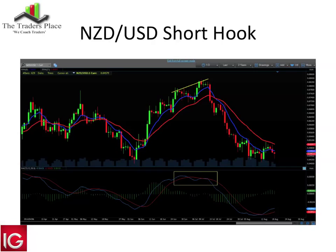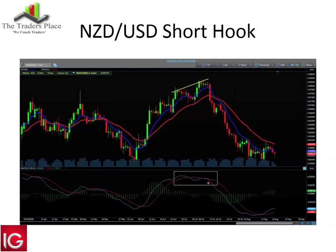On New Zealand Dollar/US Dollar, here's an example of a short hook. You can apply this across the board. I find the MACD less reliable on the ALSI futures due to gaps in the morning, and even worse below the 30-minute chart. If you're trading a 24-hour market with someone like IG, you'd probably have better results. The MACD was overbought, crossed its signal line, came back and just kissed the moving average. We also have divergence — MACD ticking lower while price ticks higher.